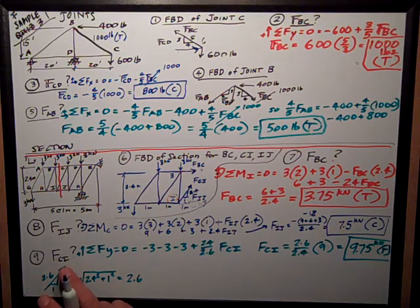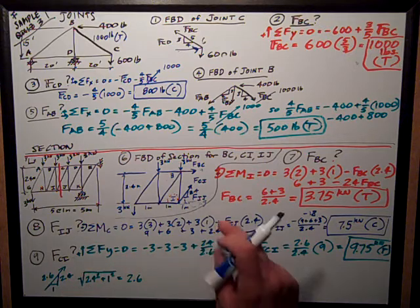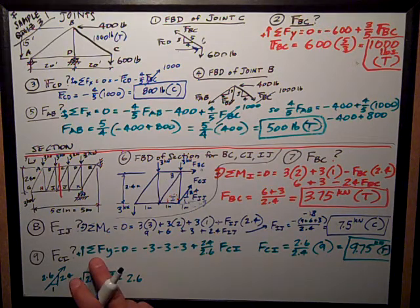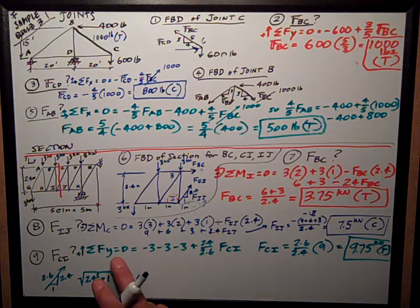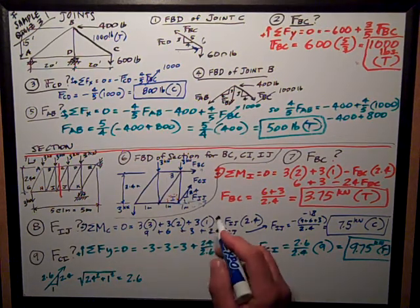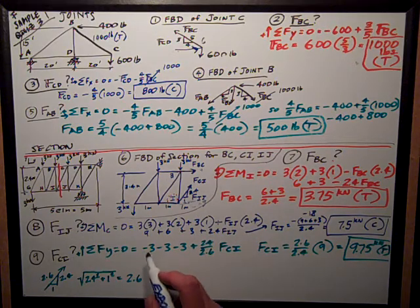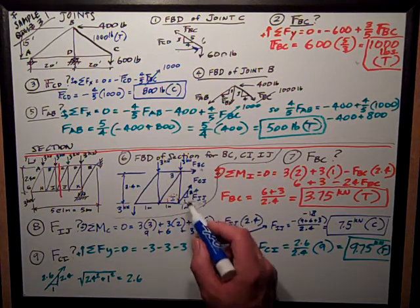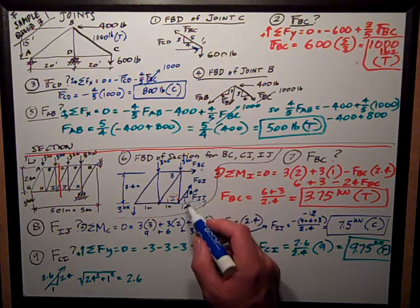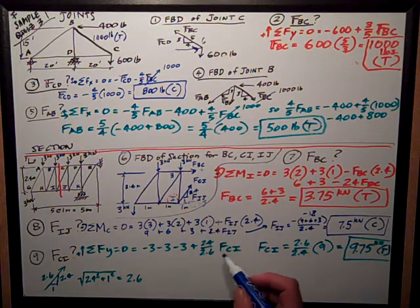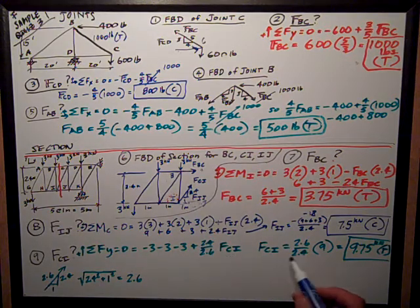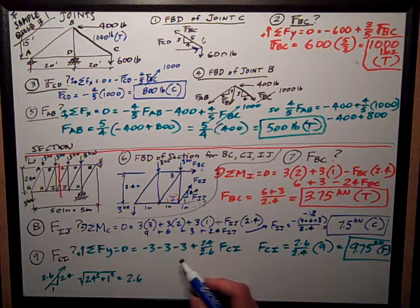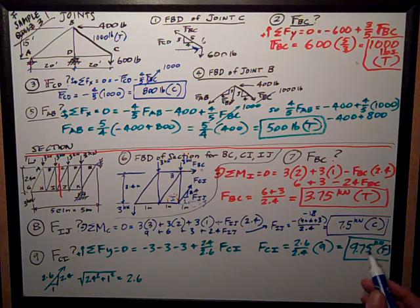Finally, question number 9, what's the force in member CI? That's this diagonally sloping member. Remember I've assumed it in tension. I just want to use my sum of forces in the Y direction positive up is equal to 0. I just look at the whole thing as a rigid body and I solve it. I have all these 3 kilonewtons down, this one, this one, and this one, three of them, plus because I've assumed tension up, the vertical component of that is 2.4 divided by the hypotenuse which is 2.6 times FCI. Rearranging, combining the terms I get the force in CI is equal to 2.6 over 2.4 times these applied forces of 9, so that's equal to 9.75 kilonewtons tension.